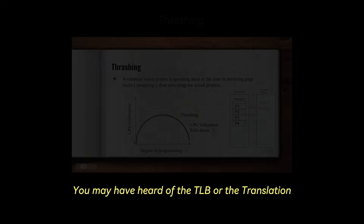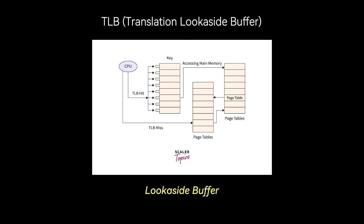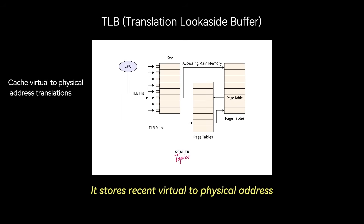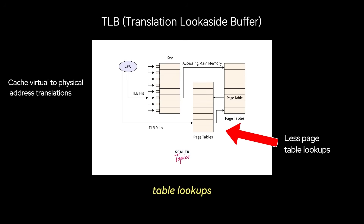You may have heard of the TLB, or Translation Look-Aside Buffer. At its core, this is just a hardware cache that stores recent virtual-to-physical address translations, helping speed up memory accesses by reducing page table lookups.